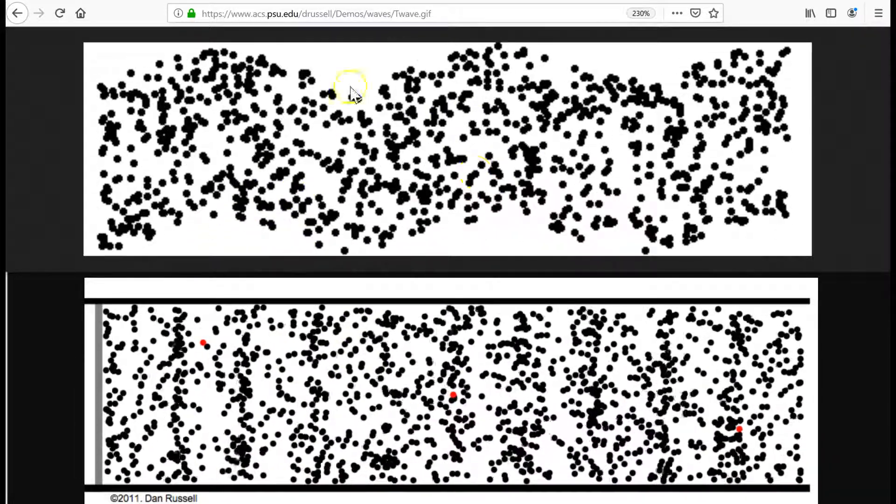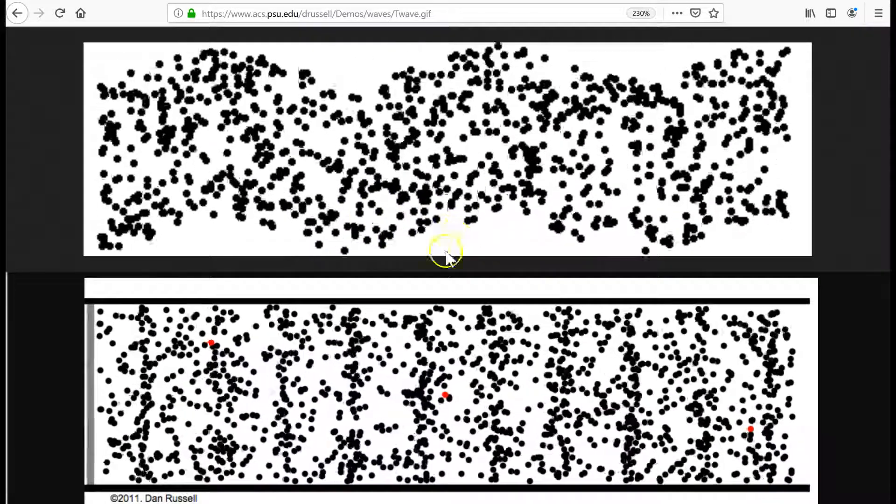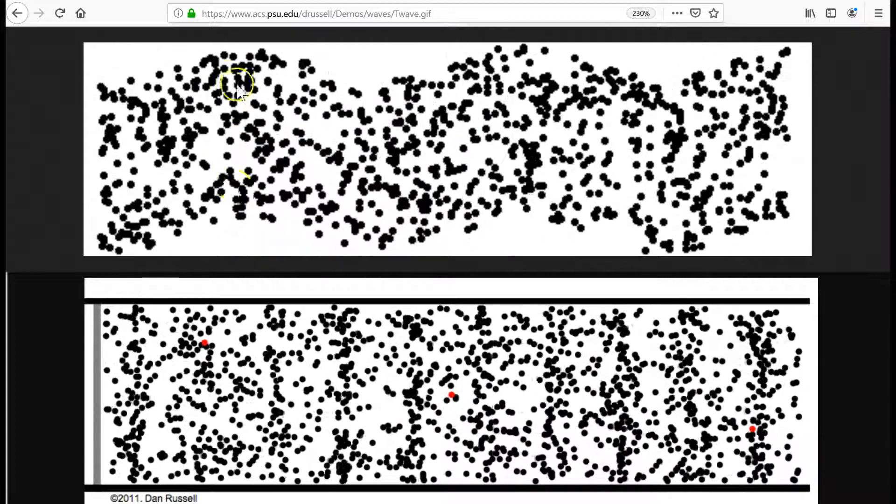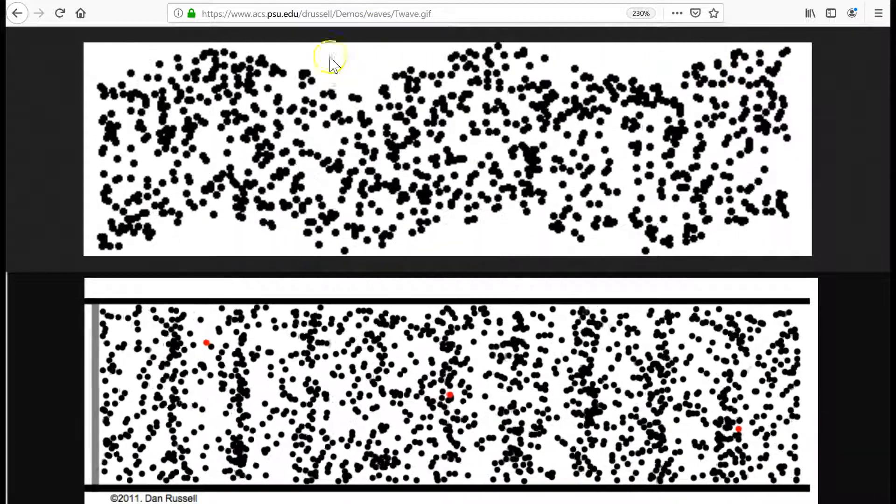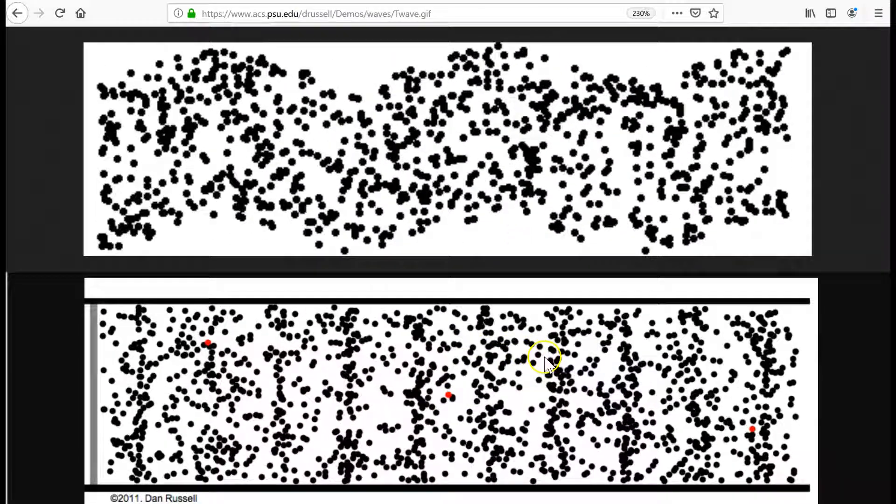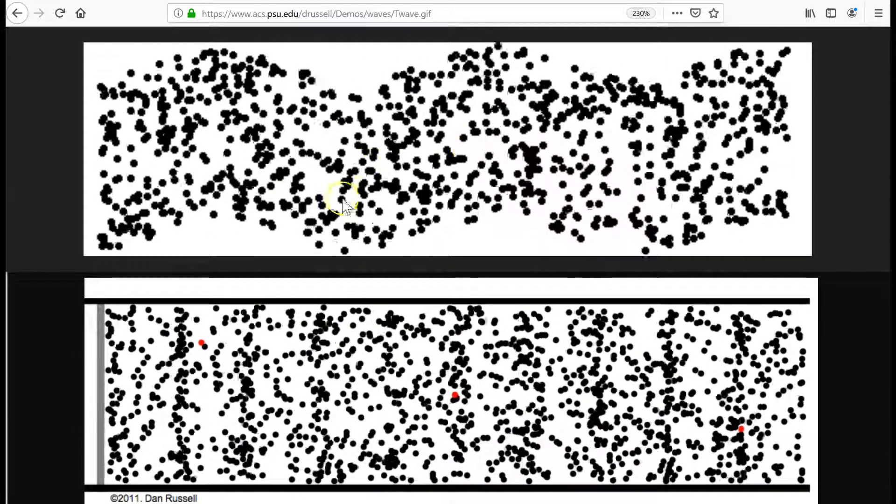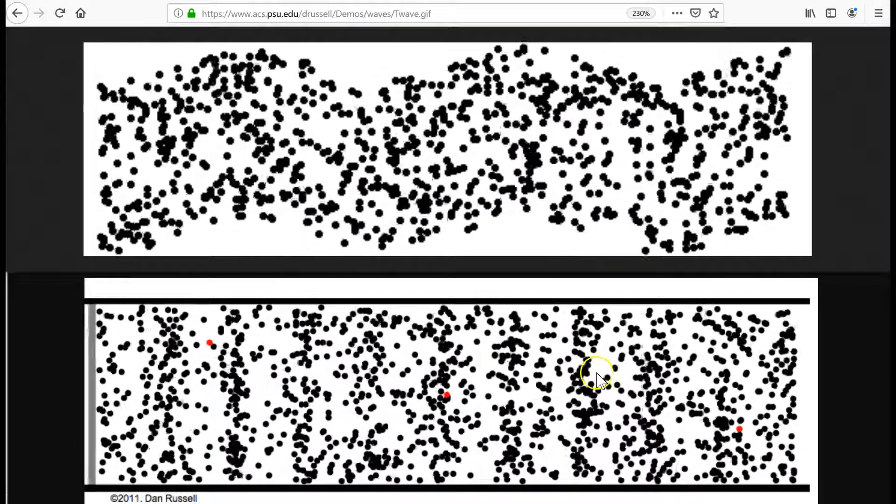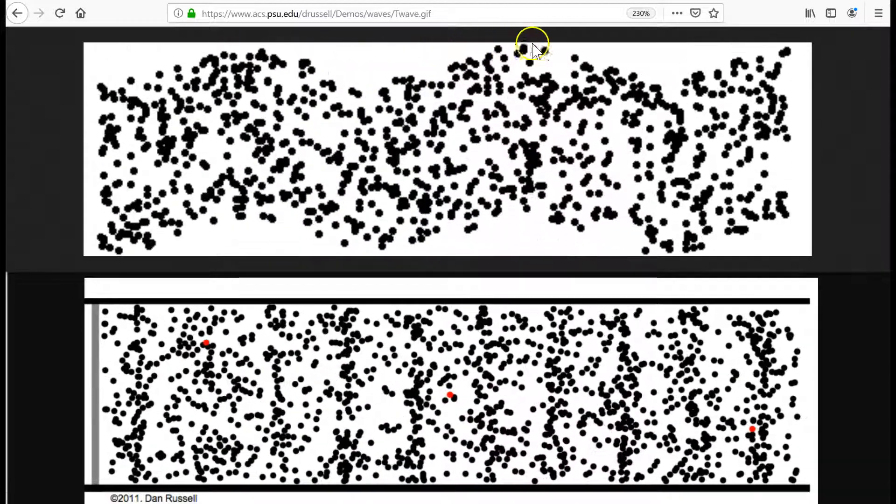In both cases, we can describe the speed of the wave itself. Not how fast particles go up and down, but how quickly energy is transferred across. How quickly this crest, or this compression, travels across the medium. Take a moment. Which wave has a higher wave speed? Clearly the top, because watch my mouse as I track a crest.